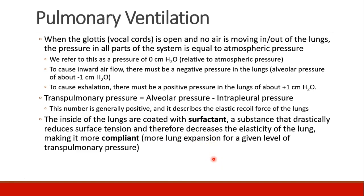The inside of the lungs is coated with a substance called surfactant. Normally, a water lining on the inner surface creates surface tension, which makes the lungs more elastic and prone to collapse. The opposite of elasticity is compliance — when there's a lot of surface tension, the lungs won't be very compliant, and you'll need to generate a lot of pressure to get a given volume of gas into the lungs. Surfactant decreases surface tension, making the lungs less elastic and thereby more compliant, so you can get more volume of air in for the same amount of pressure or work.